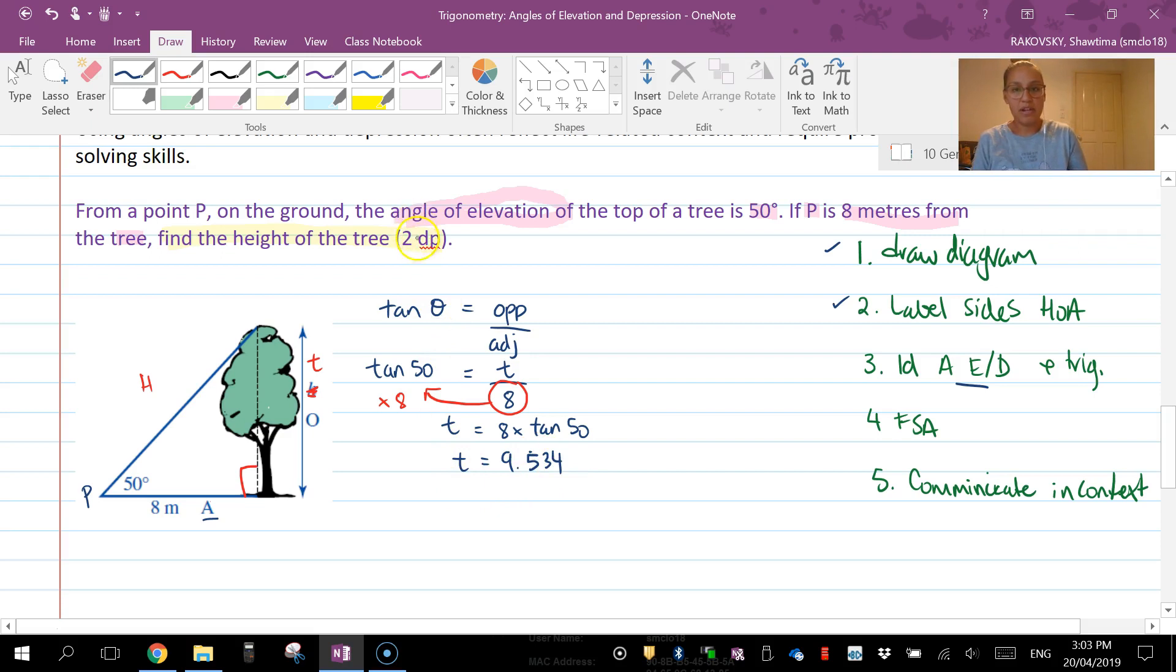And then T equals 9.5853 and I've got to round to two decimal places, so T is approximately 9.53 meters tall. So I'm going to communicate in context related to this question.